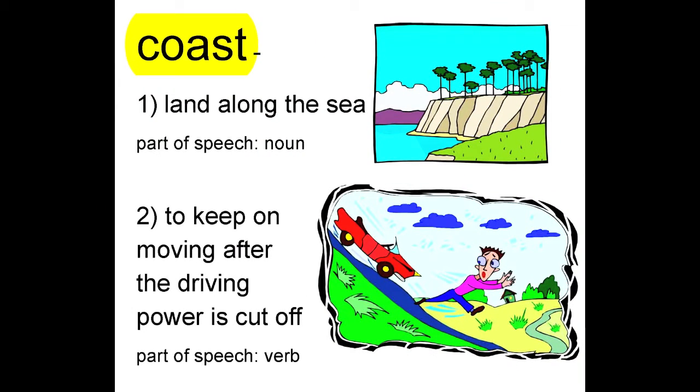Some words will have two different definitions and two different parts of speech, like this one, coast. The first definition of coast is land along the sea. The part of speech is noun since this definition makes coast a person, place, or thing. The second definition is to keep on moving after the driving power is cut off. Part of speech is verb since this definition makes coast an action word.